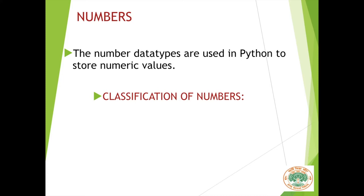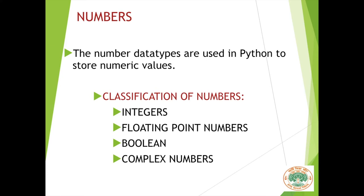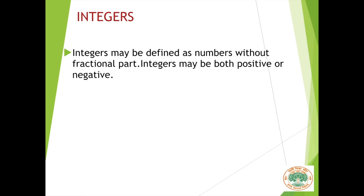Let us see the classification of numbers. Numbers can be classified as integers, floating point numbers, Boolean numbers, and complex numbers. Let us begin with integers. Integers may be defined as numbers without a fractional part. That means numbers like 0, 1, 2, 3, 4, 5, 6 and also negative numbers like minus 1, minus 2, minus 3 are all known as integers. For example, 0, minus 6, 41, minus 7, 43 are some examples of integers.